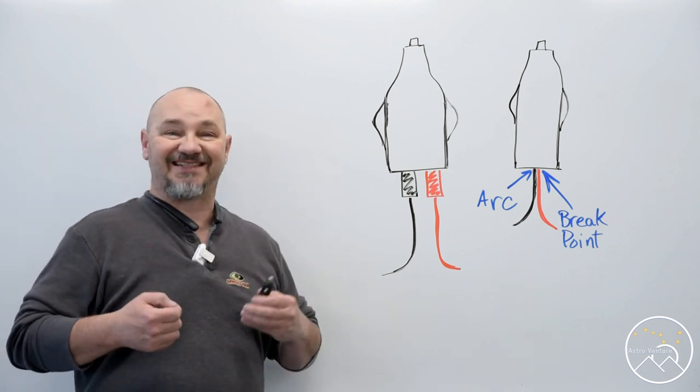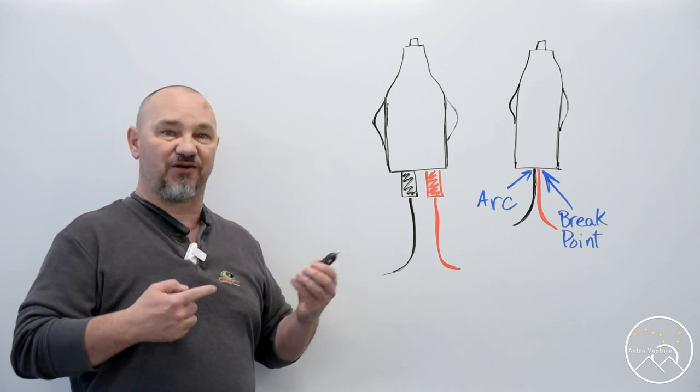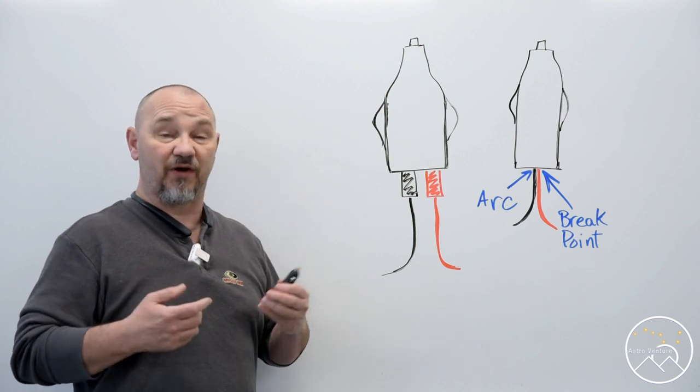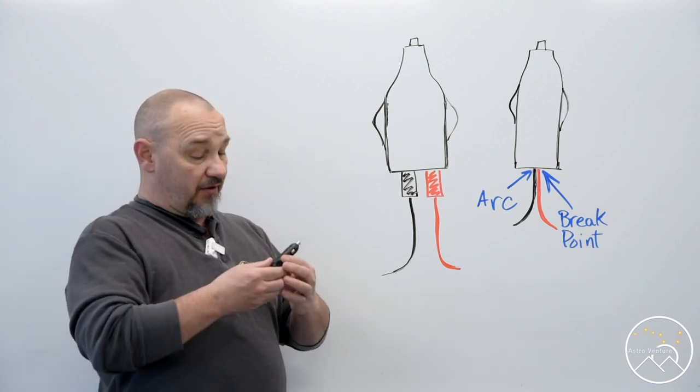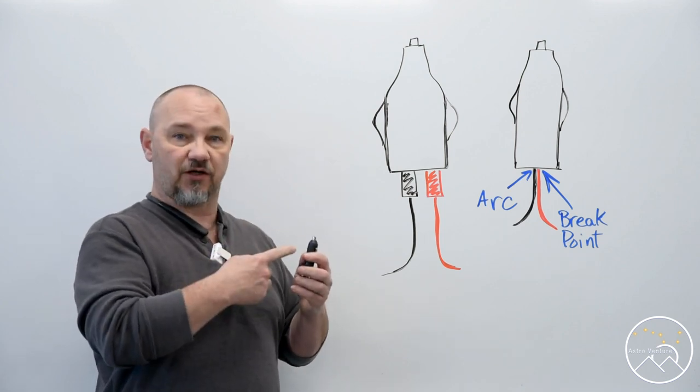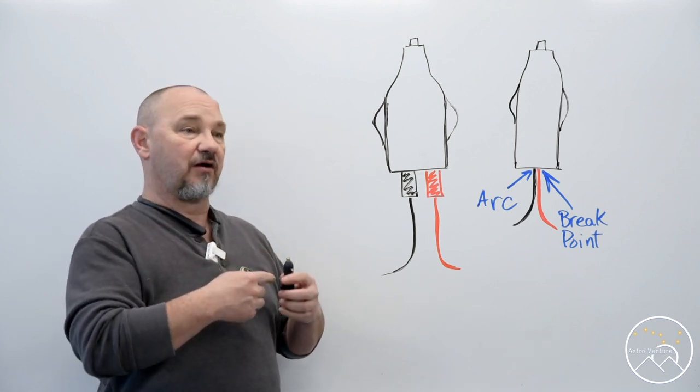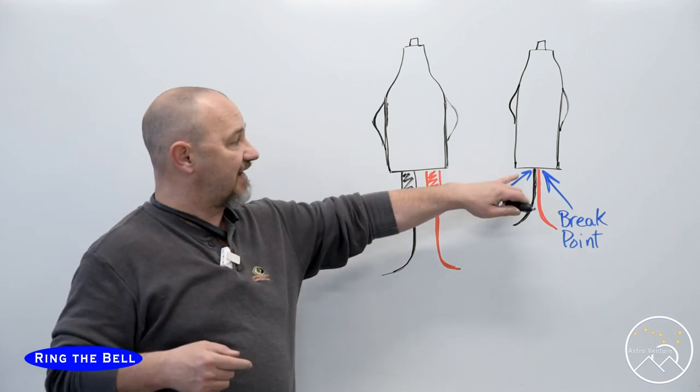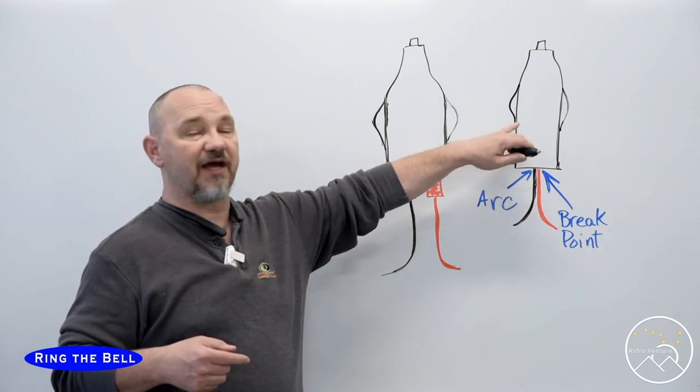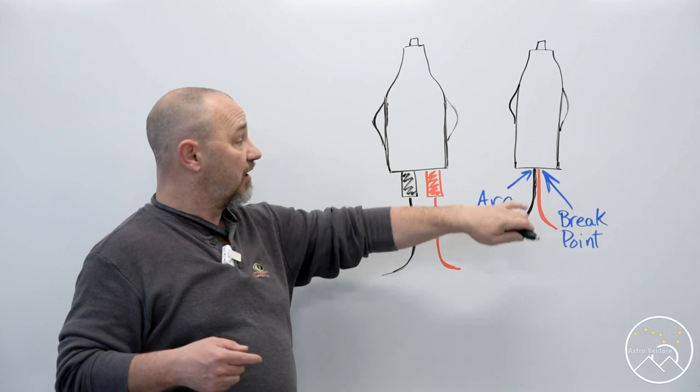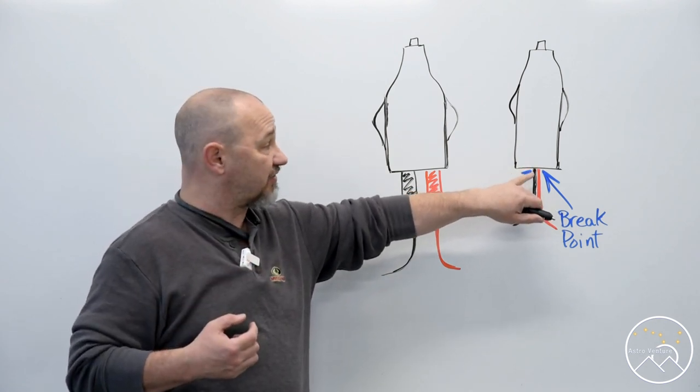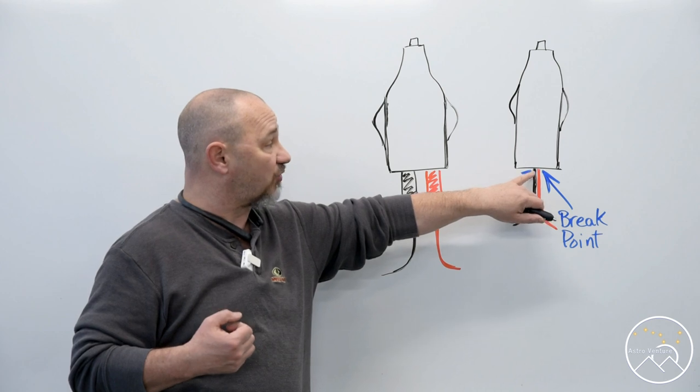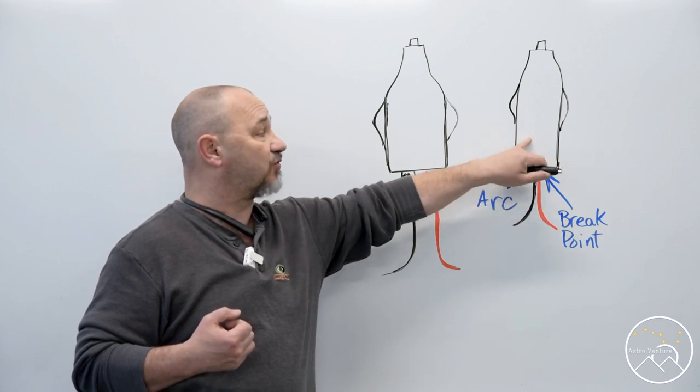Today I want to talk about a disaster I had on my last weekend of going out and shooting. What happened was my 12 volt connector failed me. Normally the wire casing where it goes into the actual 12 volt plug, it breaks the casing of the wires. The insulation will crack and break right there where it goes into the plug.